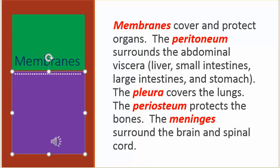Membranes cover and protect organs. The peritoneum surrounds the abdominal viscera, liver, small intestines, large intestines, and stomach. The pleural covers the lungs. The periosteum protects the bones. The meninges surround the brain and spinal cord.